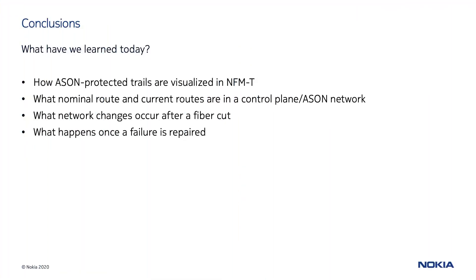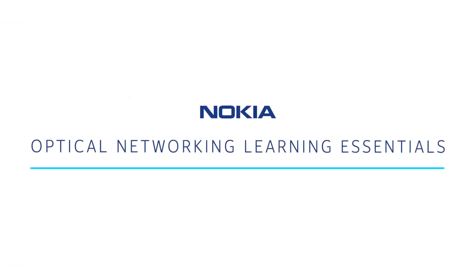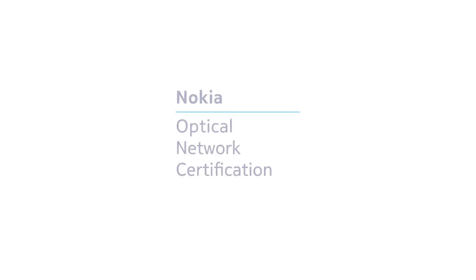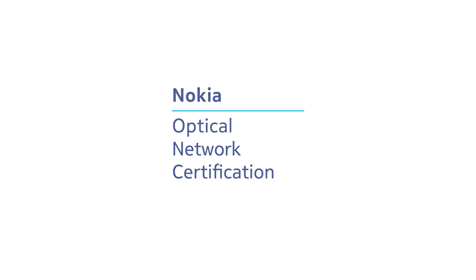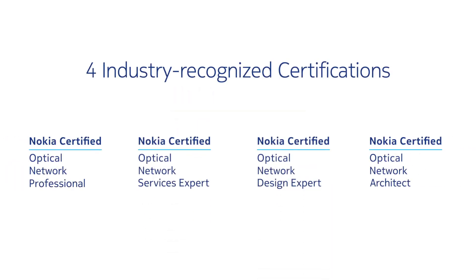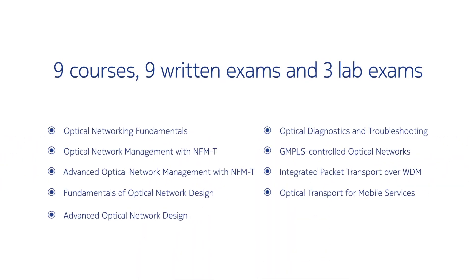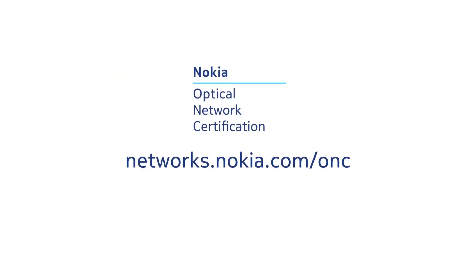Today we have seen how to visualize an ASON trail, how nominal and current routes are reported on NFMT, and what happens when a failure affects transmission. Thanks for watching — look for more videos in our Optical Networking Learning Essentials series. Whether your goal is to enhance your optical networking skills or demonstrate your expertise through one of our four industry-recognized certifications, the Optical Network Certification Program features nine instructor-led courses developed by subject matter experts using industry best practices, use case-driven examples, and hands-on labs.